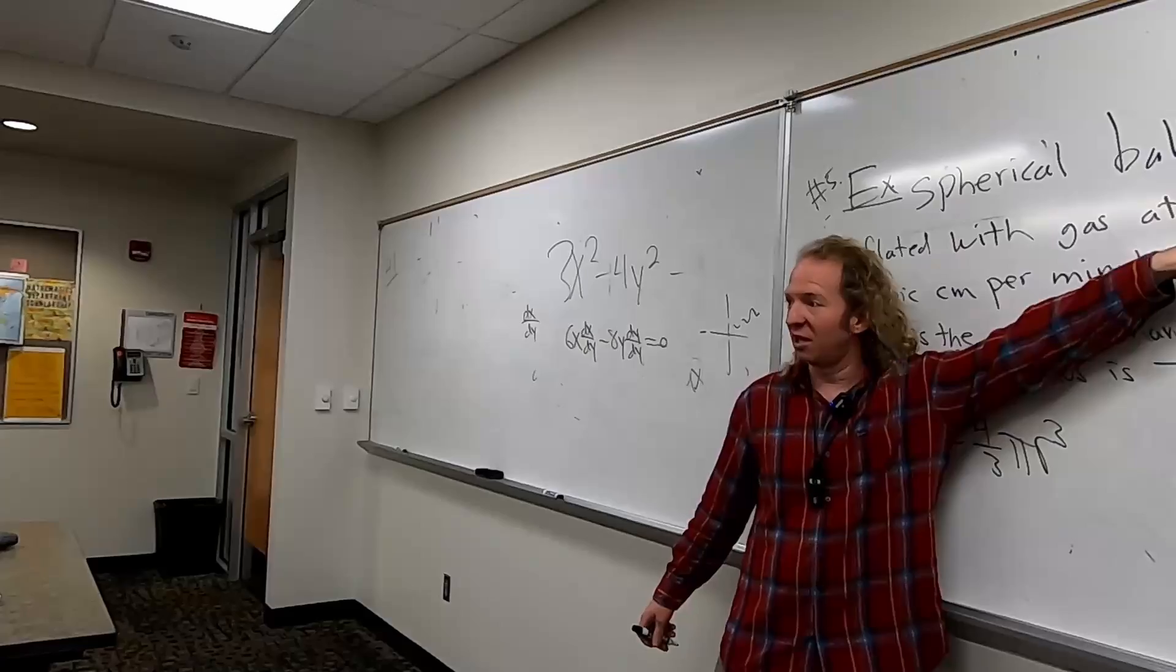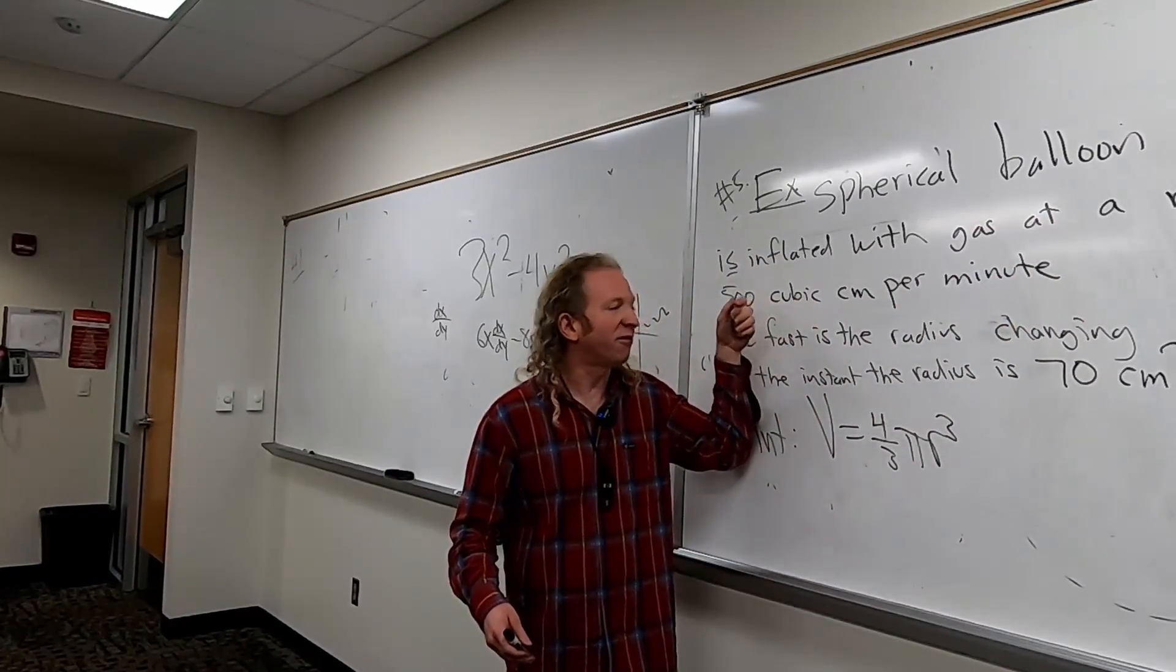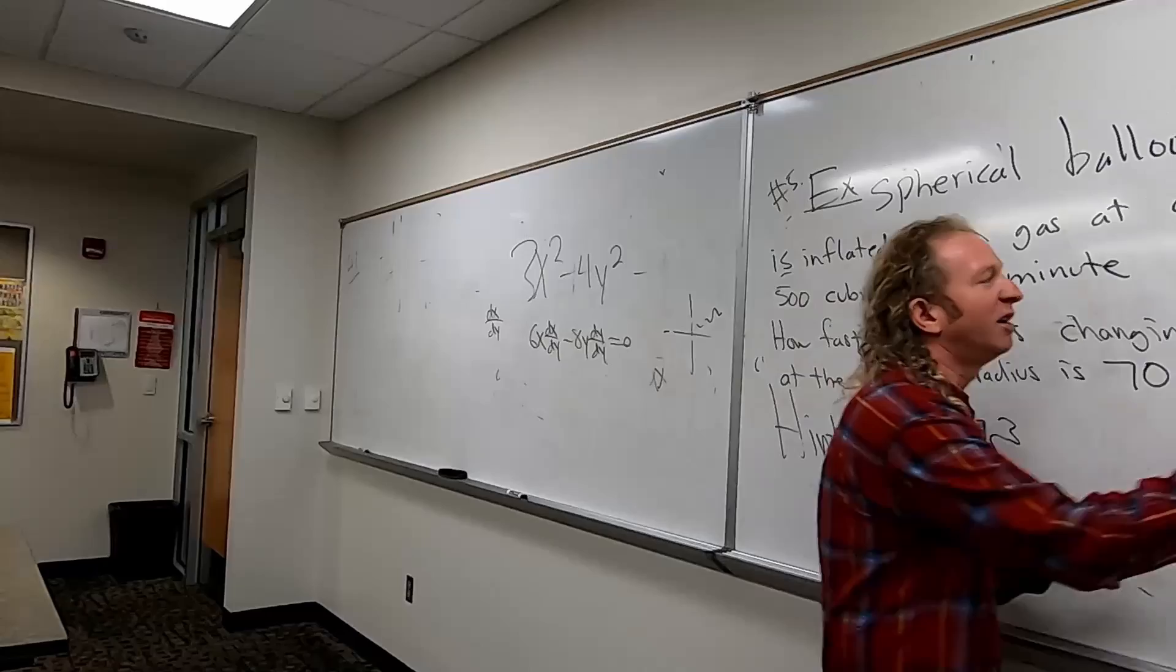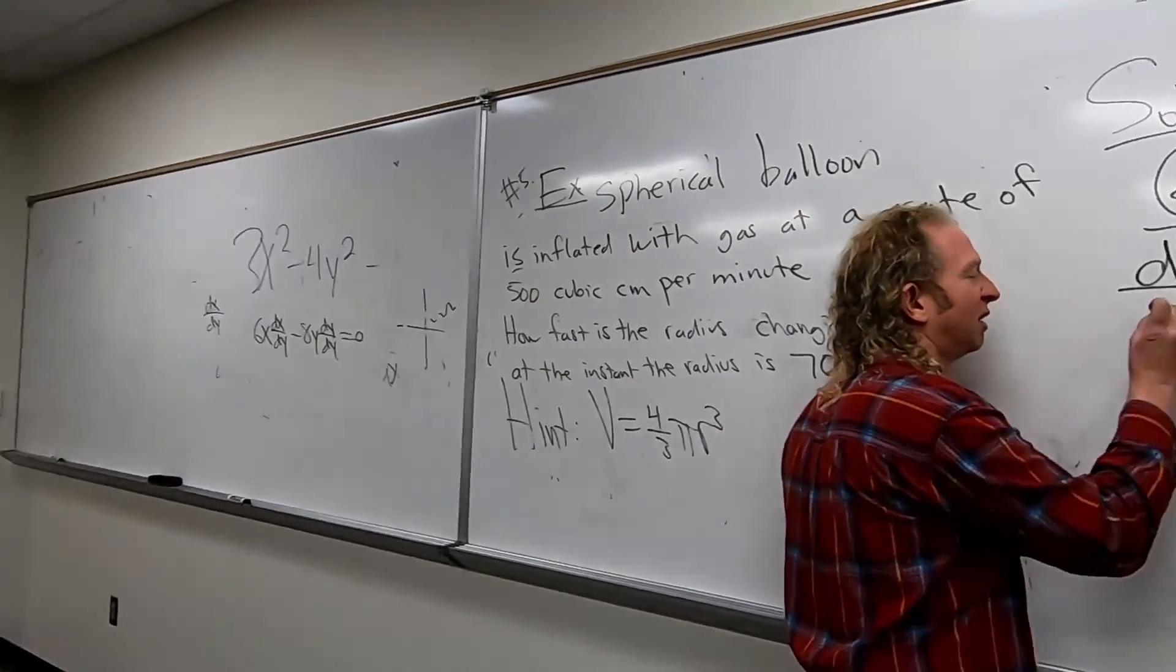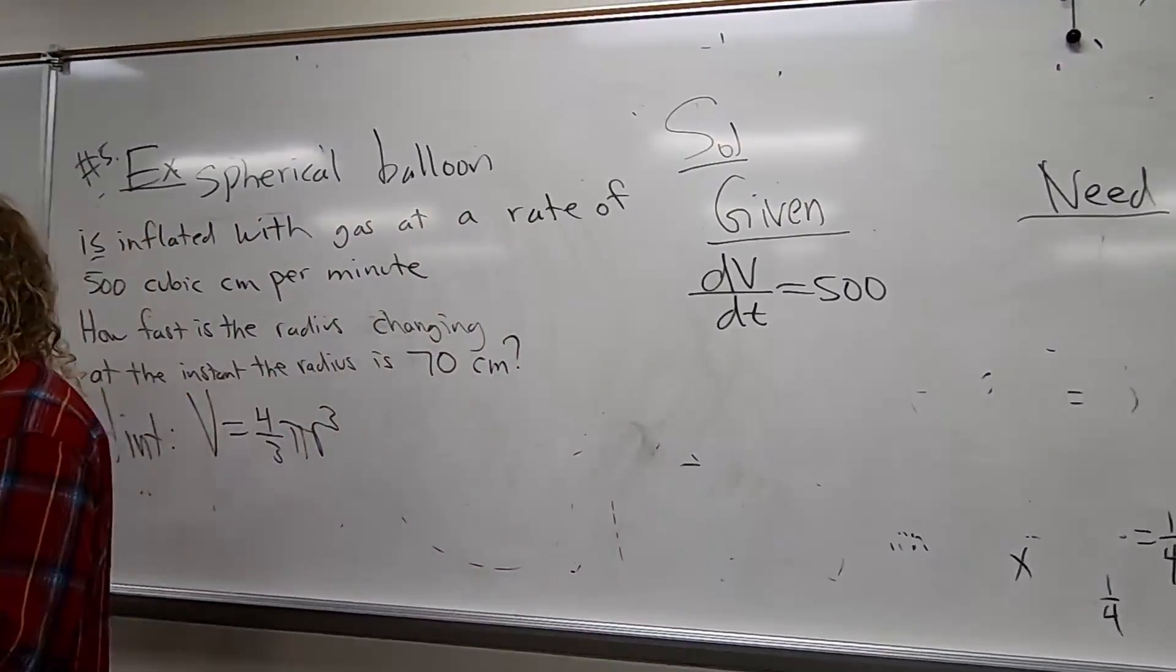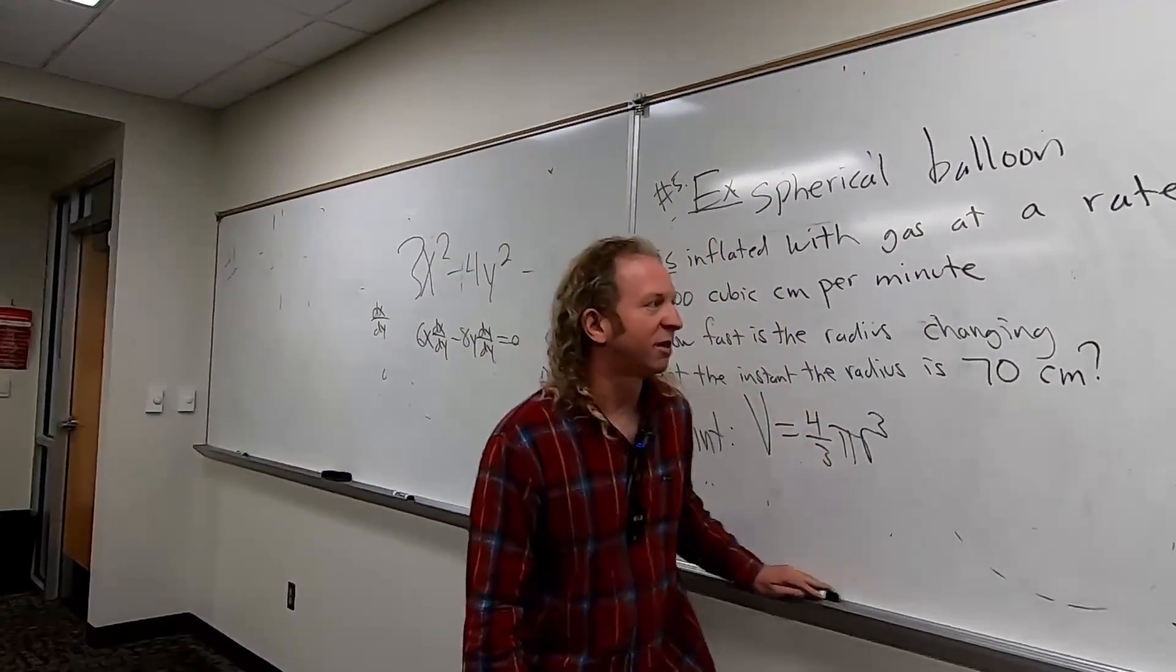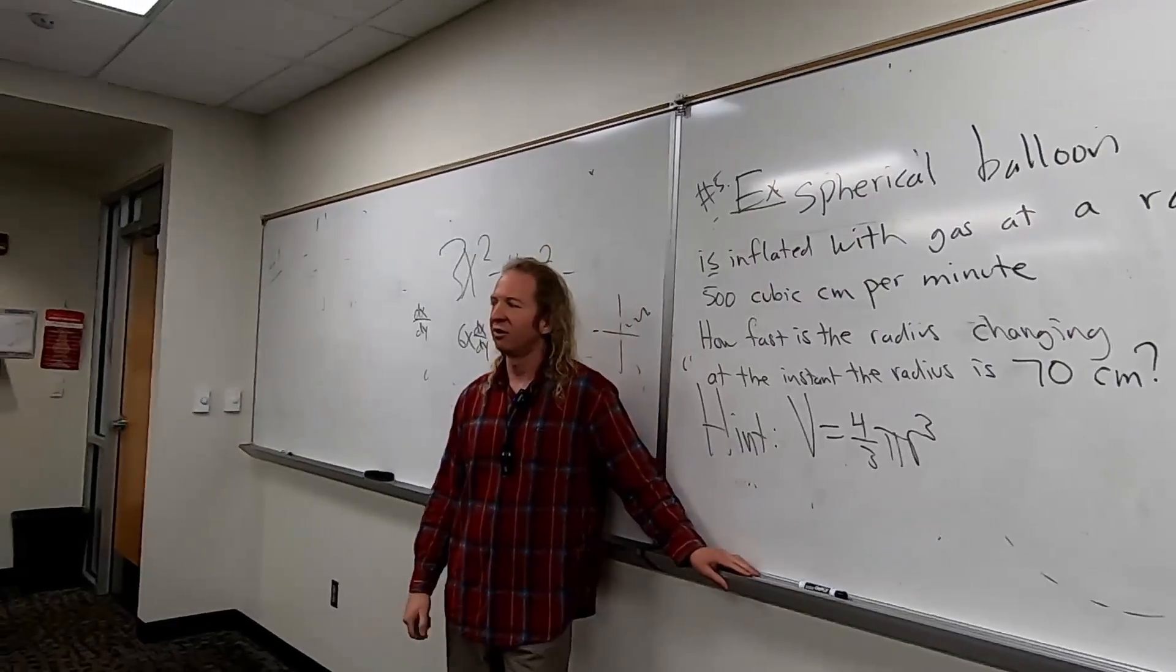And then it's a rate. It's per minute. So it's a derivative. So this is the rate of change of the volume. So we're given dV/dt equals 500. It's not always the case, right? There's different variations of this problem. But that's this one in particular. So that's what we're given. Good, Josh.